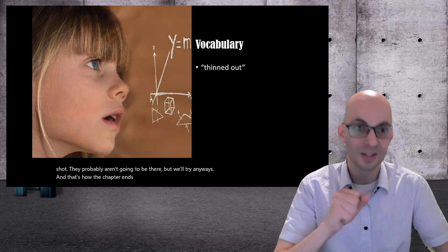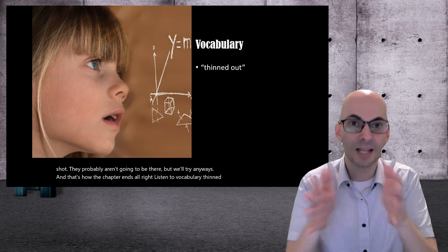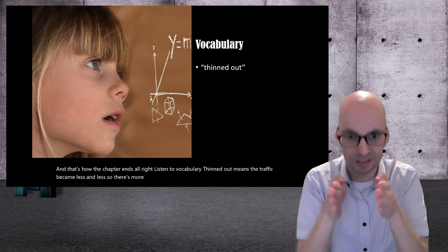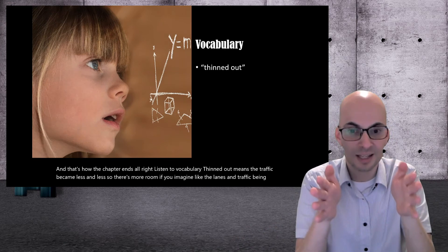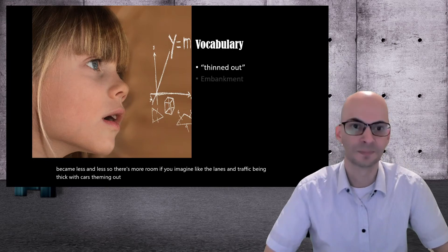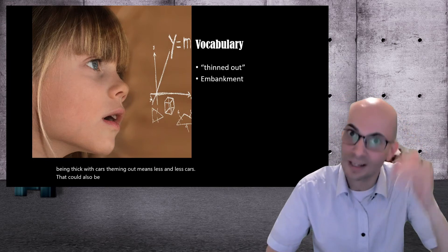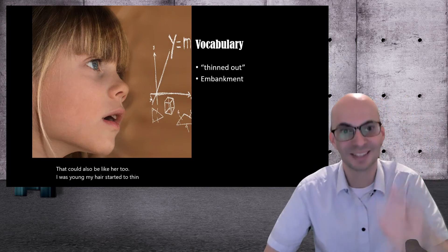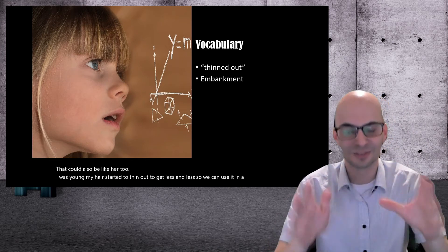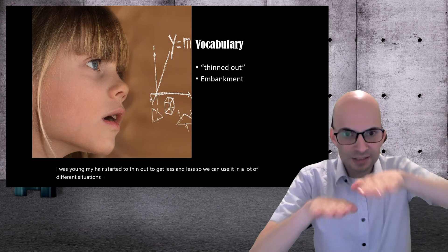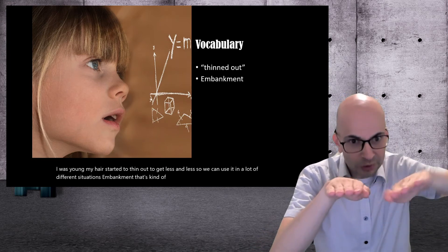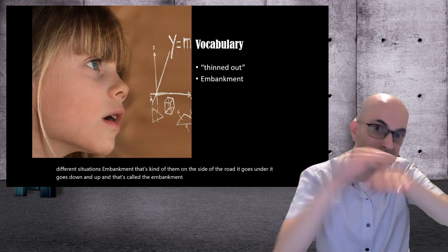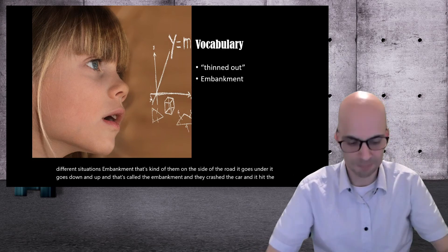All right, let's jump into vocabulary. Thinned out means the traffic became less and less. So there's more room. If you imagine like the lanes and the traffic being thick with cars, thinning out means less and less cars. That could also be like hair too. When I was young, my hair started to thin out to get less and less. So we can use it in a lot of different situations. Embankment. That's kind of on the side of the road, it goes under, it goes down and up and that's called the embankment and they crashed the car and it hit the side and hit the embankment.